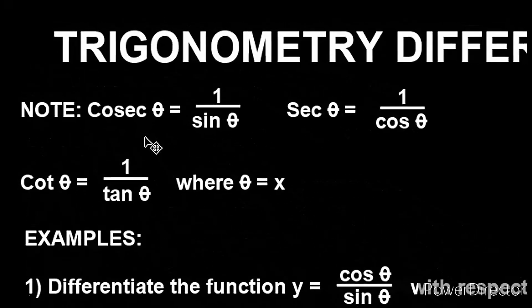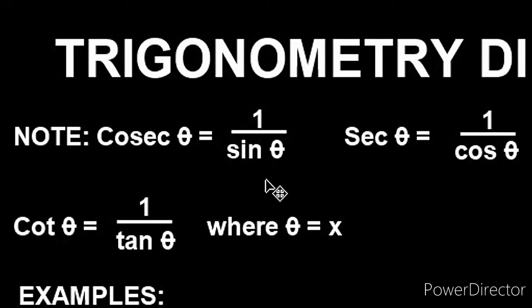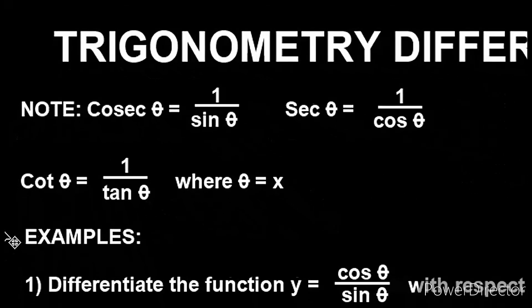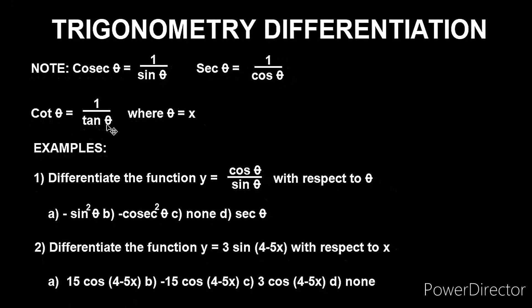Now, in trigonometry: cosec θ equals one over sin θ, sec θ equals one over cos θ, and cot θ equals one over tan θ. This is very important — we will get to see the application of what we have noted here as we progress into the practical section of this video.